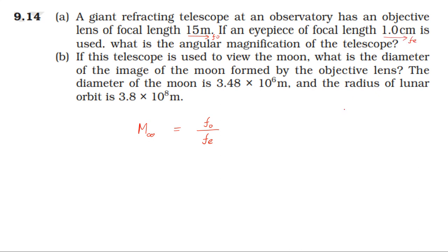So the focal length of the objective lens is 15 meters and the focal length of the eyepiece is 1 centimeter. Therefore, the angular magnification equals 15 meters divided by 1 centimeter, which gives 1500.